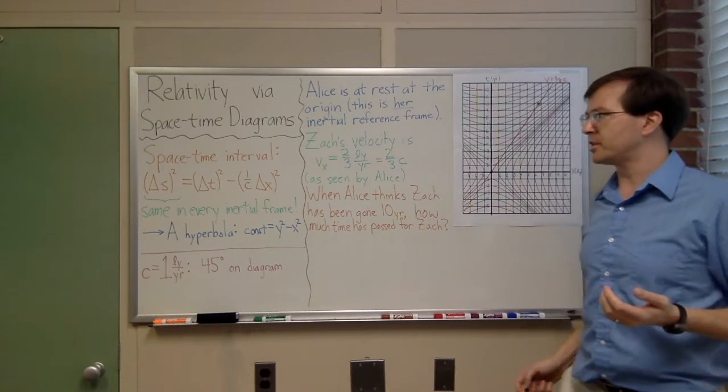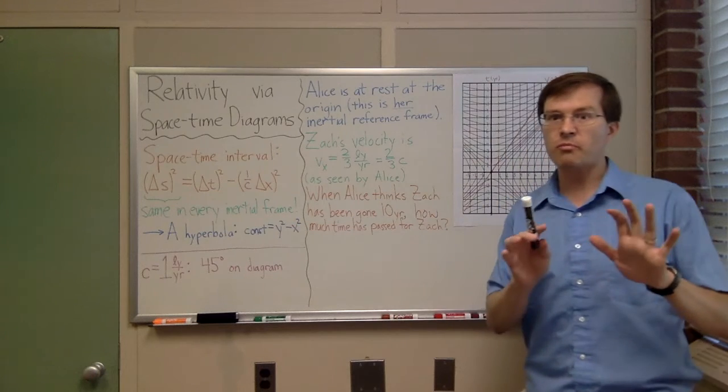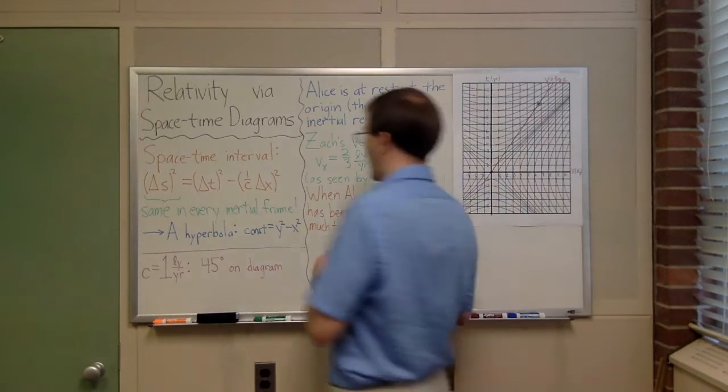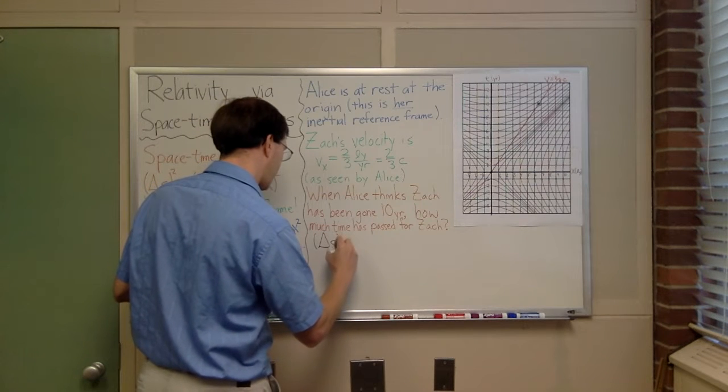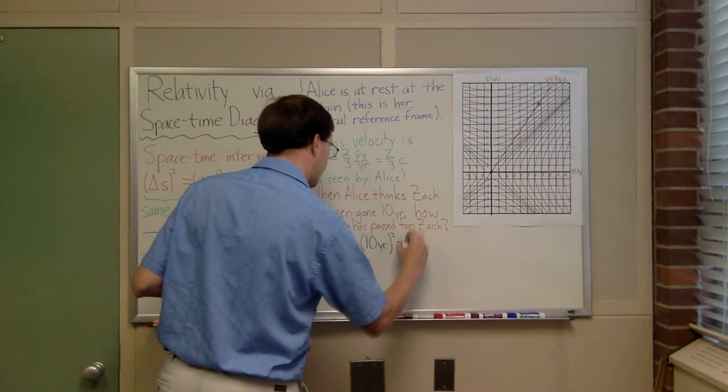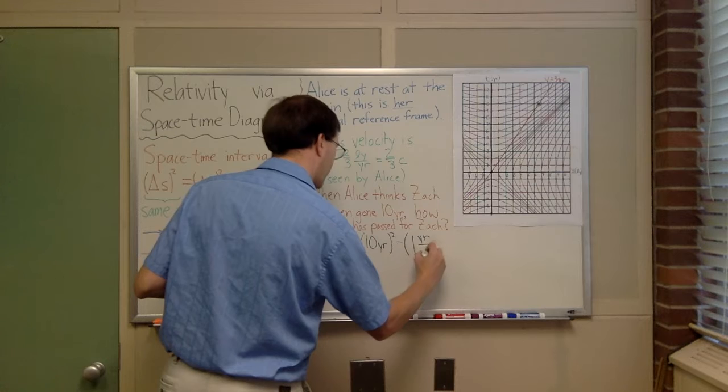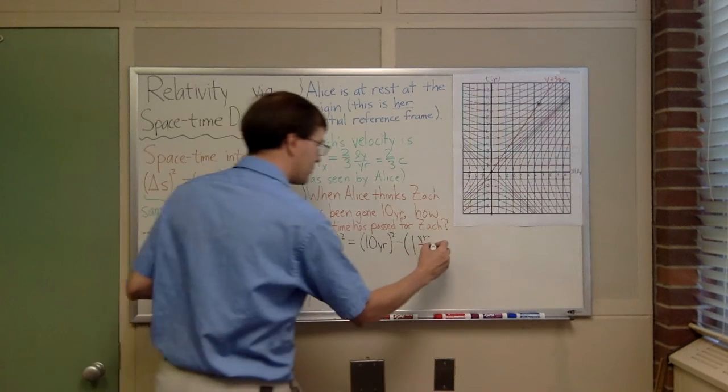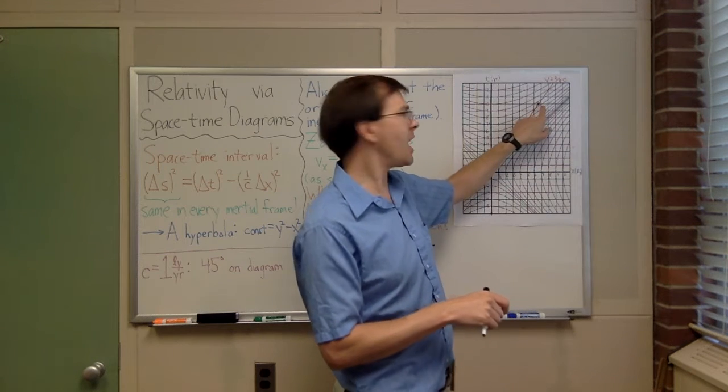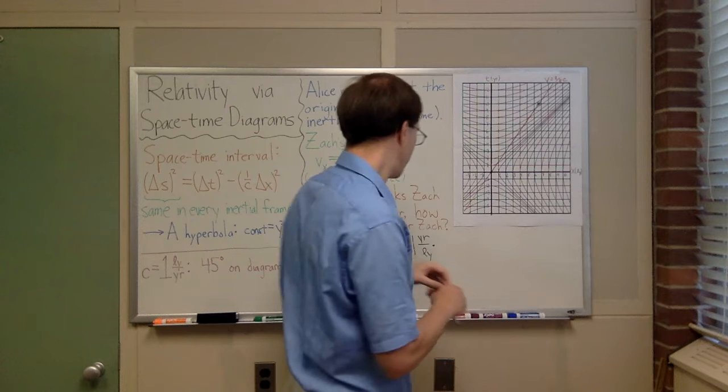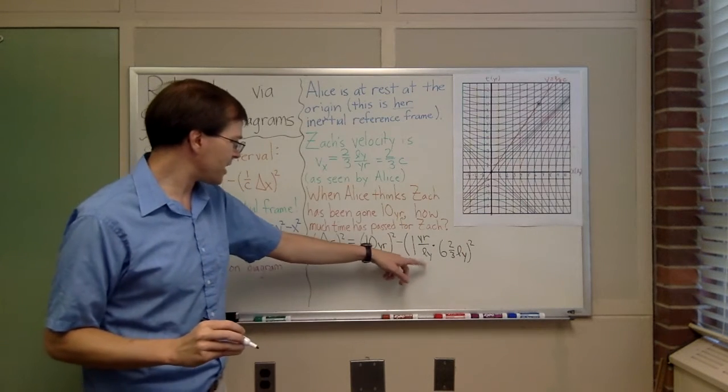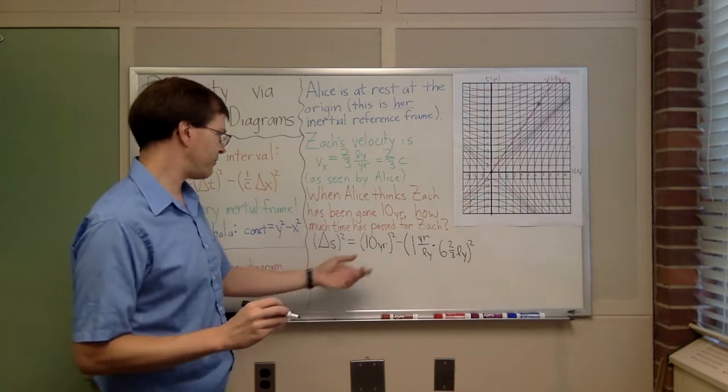The first step is going to be to use the spacetime interval to answer that question. If I want to do this with math, we'll see how to do it in the diagram in just a minute. But with math, to start with, let's find the spacetime interval between those two events. I would say that delta s squared has to equal Alice's measurement of delta t is ten years, ten years squared, minus one over c is one year per light year, that's the inverse of the speed of light, times, and what do we say? That Zach's travel, if Zach traveled for ten years at two-thirds of the speed of light, distance equals velocity times time, so that's twenty-thirds, six and two-thirds, six and two-thirds light years squared.